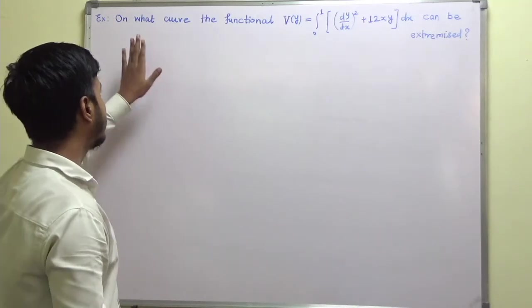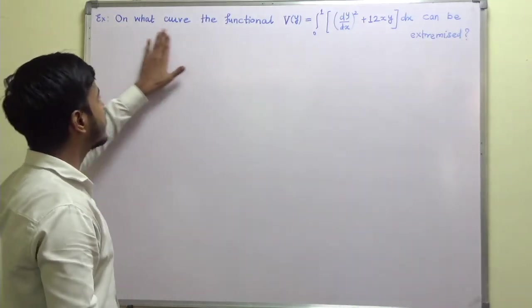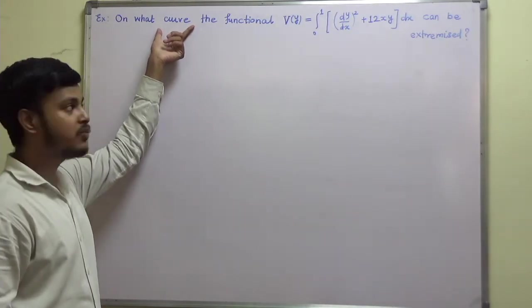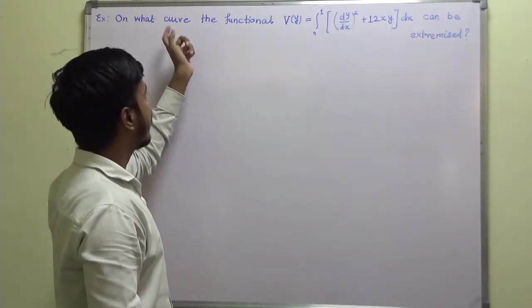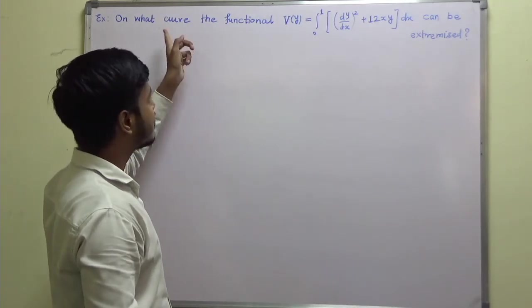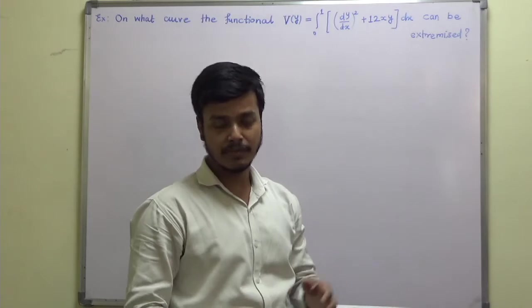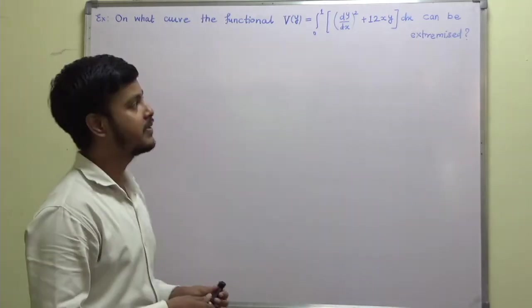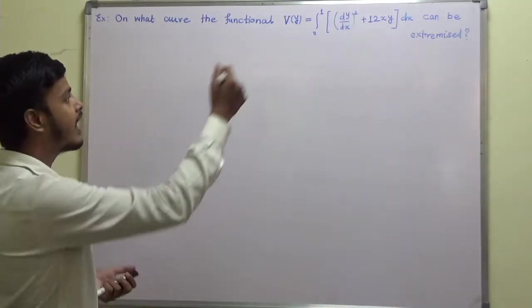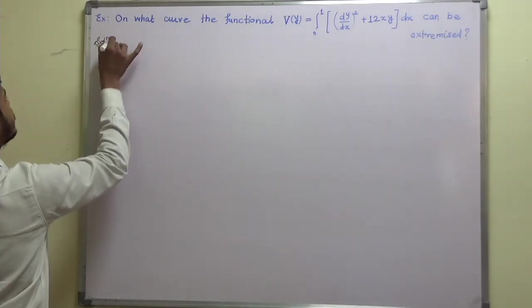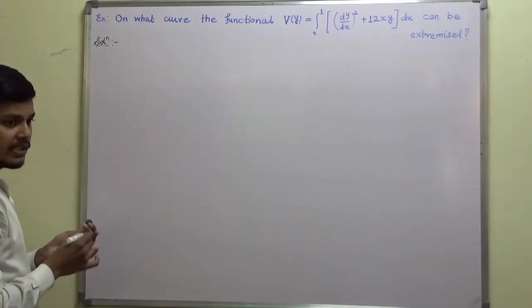So let us see this problem. This problem says on what curve the functional, so we have to find out the curve, means y is equal to y of x. So we have to find out that curve on which the functional V(y) can be extremized, maybe maximum or minimum. So whenever you have such problem, the first thing that you can do is you can just write down the function.